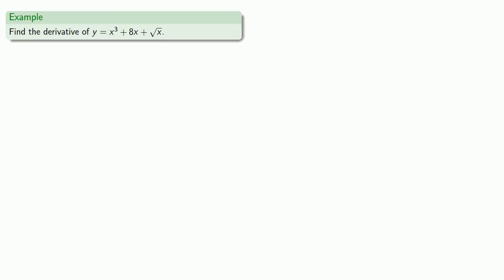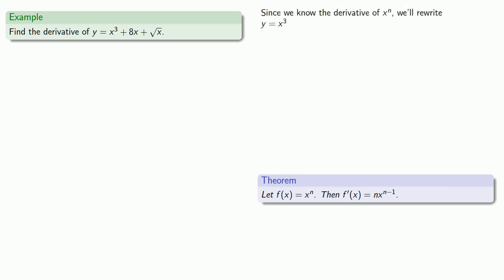For example, suppose we want to find the derivative of x cubed plus 8x plus square root of x. Now, if the only tool you have is a hammer, everything looks like a nail. In this particular case, the only tool we have is the derivative of x to the n. So we have to make sure that everything looks like a nail. In this particular case, we want to make sure that as many things as possible look like something to the power n. So, x cubed is already x to the n. 8x can be rewritten as 8x to the first. And square root of x can be rewritten as x to power 1 half.